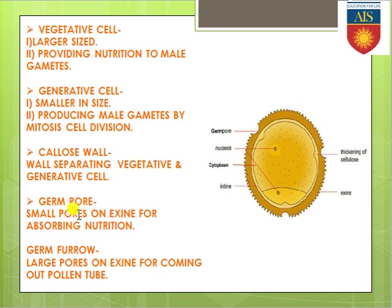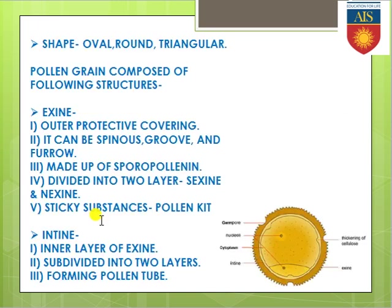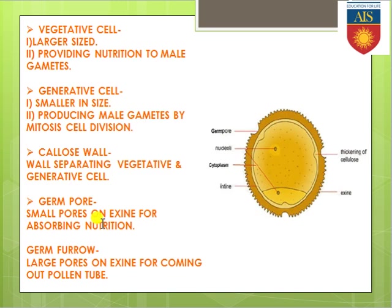These are the overall structural features: exine, entine, then vegetative and generative cells present in the cytoplasm, and callose wall, germ pore, and germ furrow — these are the overall structures present within the pollen grain.